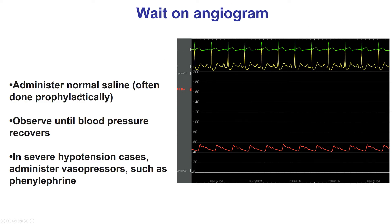If nitroglycerin causes hypotension, then the operator needs to wait. Usually fluids are given — normal saline — until the blood pressure recovers, which usually happens in a few minutes. Rarely, in cases of severe hypotension, usually in the setting of a vasovagal reaction, a vasopressor may be given, such as phenylephrine.